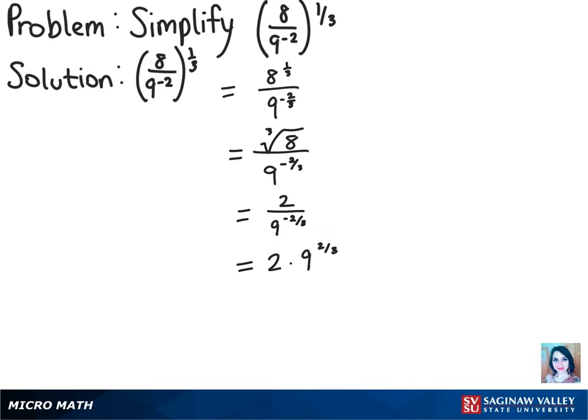We can rewrite this as 2 times 9 squared to the 1/3 power. After squaring that, we'll have 2 times 81 to the 1/3 power.